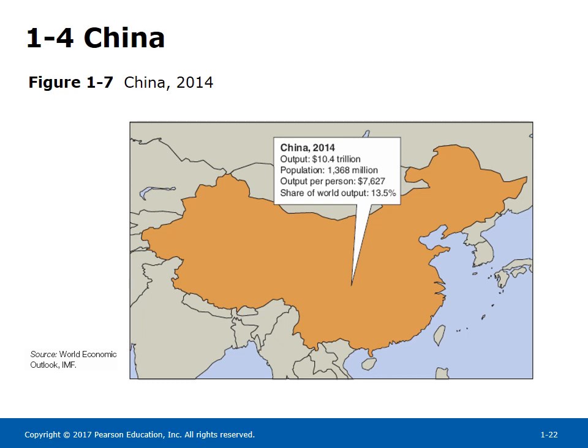However, if purchasing power parity measures are used to calculate output per person in China, it would be $12,100, roughly one-fourth of the output per person in the United States. This is a more accurate picture of the standard of living in China.